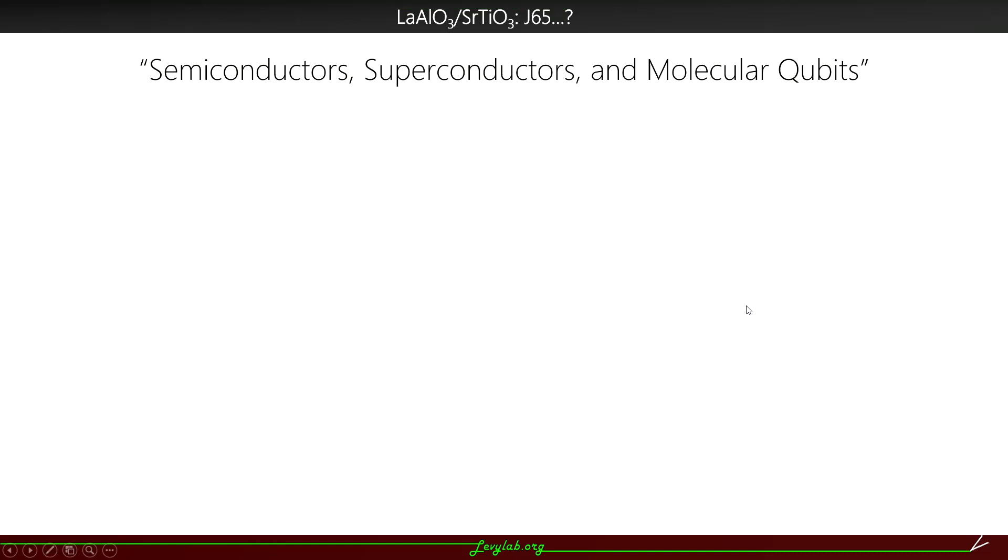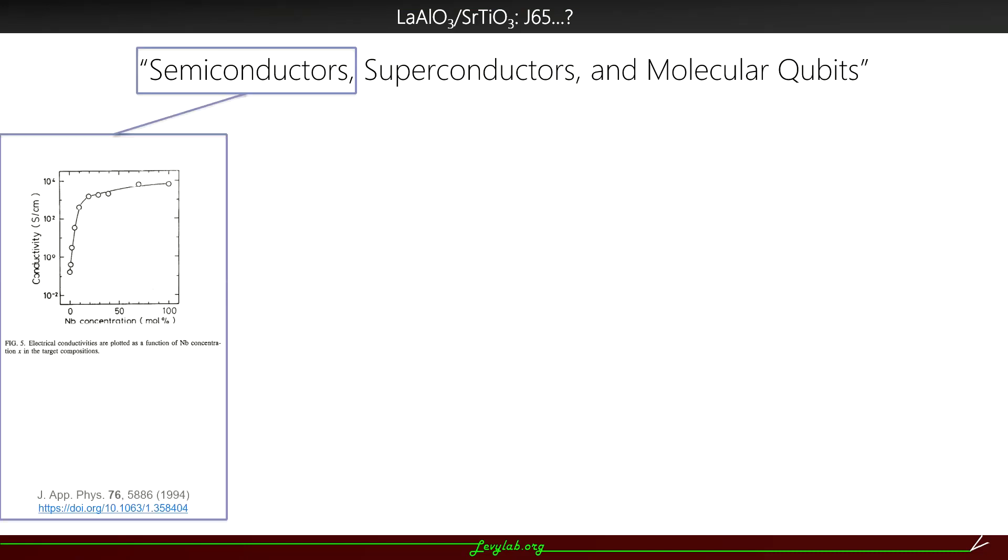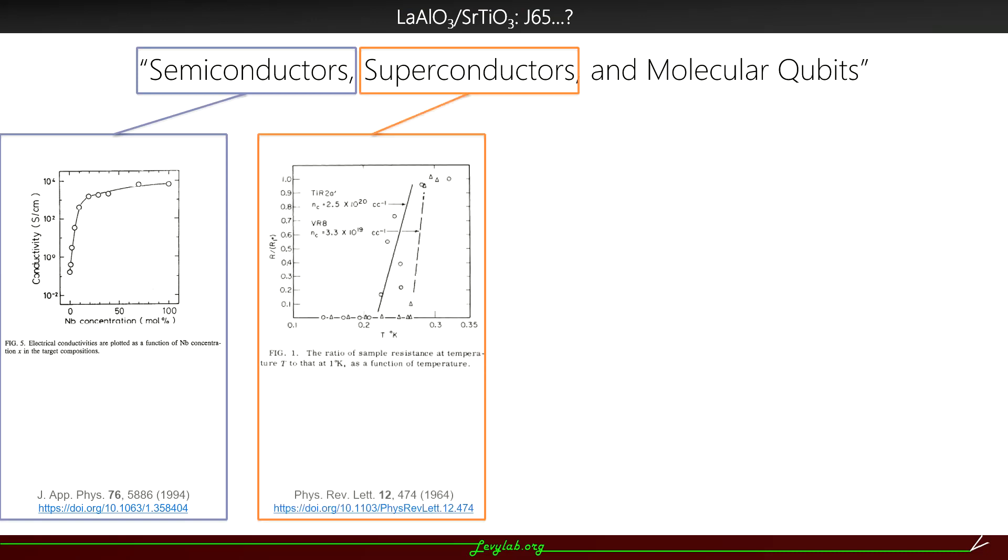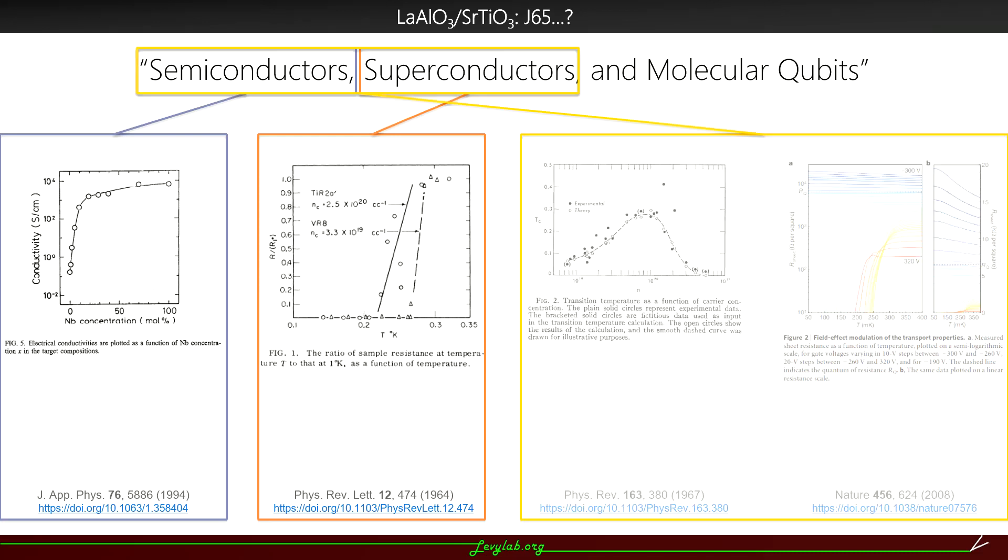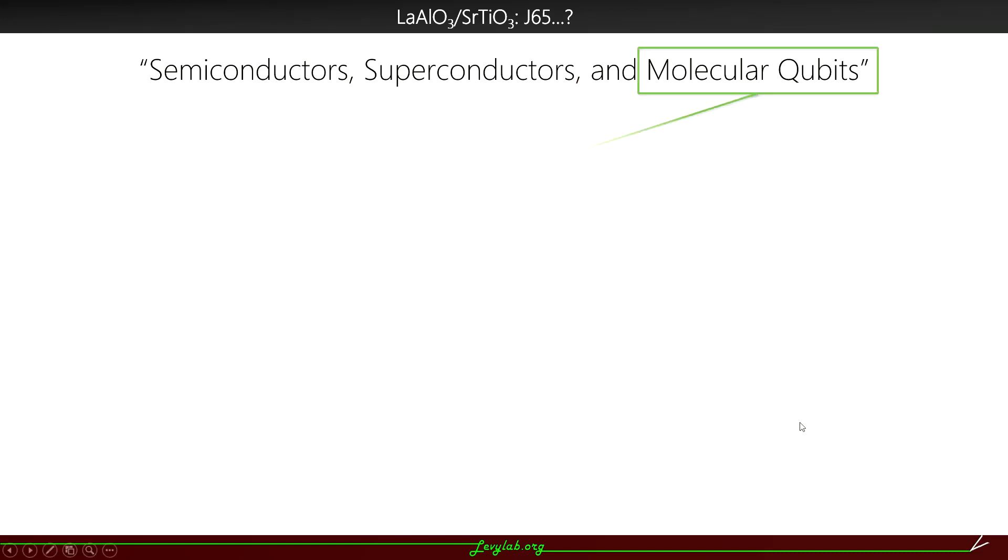So this session, J65, is semiconductors, superconductors, and molecular qubits. So what are we doing in this session? It turns out that strontium titanate is a semiconductor. It is also a superconductor, which has been known since 1964. It has a transition temperature of between 200 and 300 millikelvin. It is also a superconducting semiconductor, meaning that we can control its superconducting properties, such as transition temperature, via doping or electric field effects. So what about this molecular qubits part?